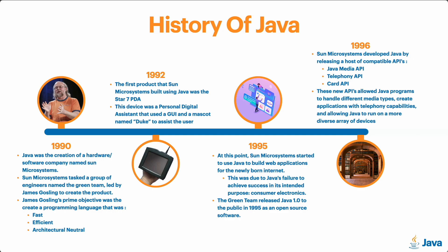Some APIs released in 1996 were the Java Media API, the Telephony API, and the Card API. These new APIs allowed Java programs to handle different media types, create applications with telephony capabilities, and allow Java to run on a more diverse array of devices. An API is basically like an extension to a programming language — it allows the programming language to do more things. These are just three of the many APIs that were released in 1996.